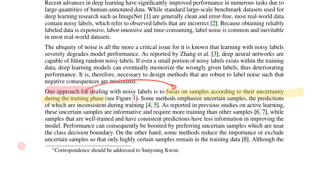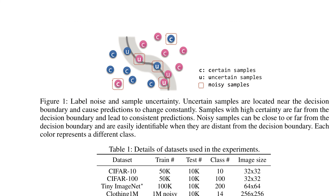Their approach focuses on samples according to their uncertainty during the training phase. Previous literature showed that uncertain samples are informative and require more training than easily learned samples. For example, if this is a decision boundary between two classes, some examples are well-learned and easy, some examples are clearly noisy and far from the decision boundary, and some examples are uncertain — lying close to the decision boundary and could or could not be noisy.